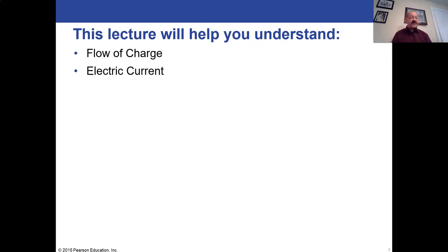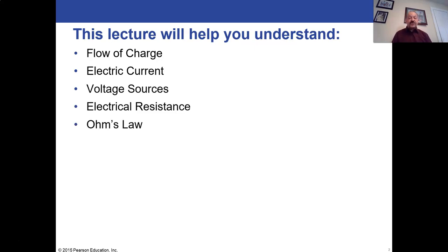We're going to talk about the flow of charge and how that relates to electric current. We'll talk about voltage and voltage sources — voltage is also called electric potential. We'll talk about the concept of electrical resistance, which is resistance to the flow of current. And we'll talk about Ohm's Law, which relates three different terms together: voltage, current, and resistance.